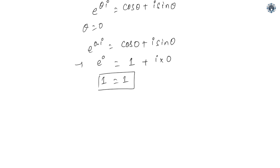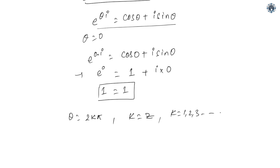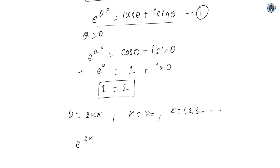Now we are going to substitute the value theta equals 2k·pi. Earlier we put theta equals 0; now we put theta equals 2k·pi, where k is an integer — k equals 1, 2, 3, and so on. Substituting theta equals 2k·pi into Euler's formula gives e to the power 2k·pi times i equals cos(2k·pi) plus i·sin(2k·pi).